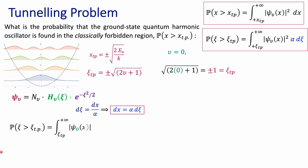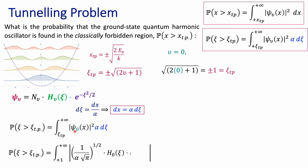The probability of finding the oscillator beyond the turning point in the reduced coordinate is equal to the integral from the turning point to infinity of my ground state wave function squared — the probability density — times alpha d chi. The alpha comes from the fact that we changed the integration variable from x to chi. I can now express the ground state wave function with its normalization constant, the Hermite polynomial of degree zero (which equals one), and the Gaussian function.